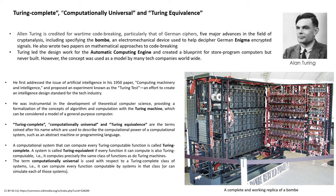Turing complete, computationally universal, and Turing equivalence are terms coined after his name, used to describe the computational power of a computational system such as an abstract machine or a programmable language. A computational system that can compute every Turing-computable function is called Turing complete. A system is called Turing equivalent if every function it can compute is also Turing computable — that is, it computes precisely the same class of functions as the Turing machines. The term computationally universal is used with respect to a Turing-complete class of systems, meaning it can compute every function computable by systems in that class or can simulate each of those systems.